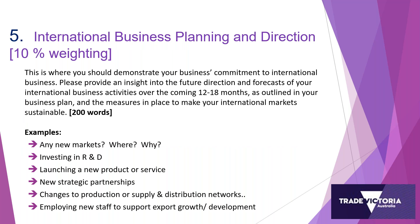Session number five, question number five — the international business planning and direction of your business — is worth a 10 percent weighting of your score. This is a very important question even though 10 percent may seem relatively low. This is important because up to this point everything in your application is looking backward — you have put in information pertaining to your business over the past 12 months, or when it comes to figures, over the past three years. You've talked about what makes your business great today and what you have achieved over the past 12 to 36 months.